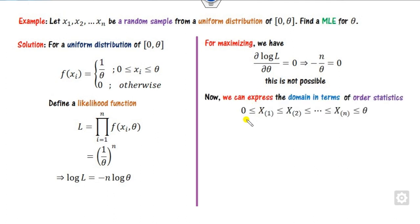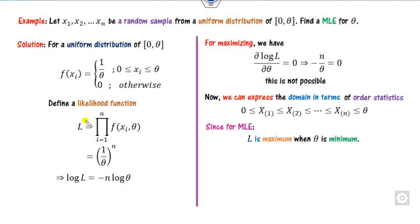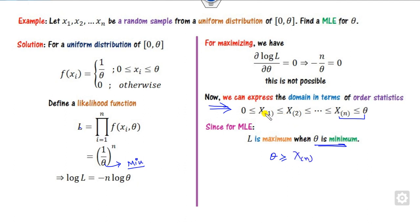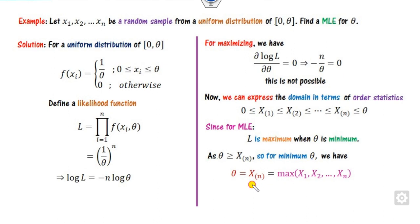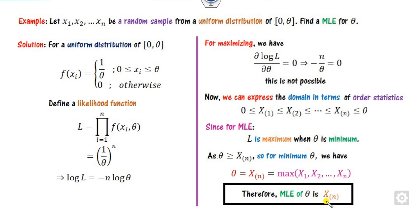How you can do this: look at L. Our target is to maximize L. L will be maximized when theta is minimized. So in order to minimize theta, you can see from the expression that X(N) is involved. The minimum value of theta is X(N), where X(N) is the maximum order statistic. Hence the MLE of theta is X(N).